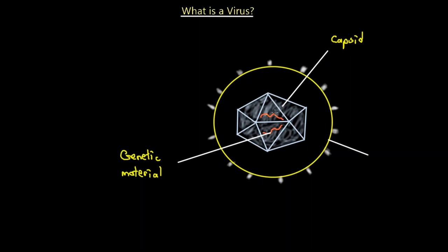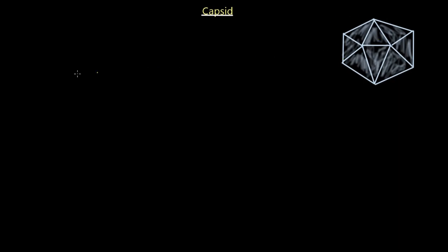The yellow circle drawn around the capsid and genetic material, with little projections, is called an envelope. Not all viruses have an envelope, and we'll talk specifically about which ones do. But it is a common feature of viruses, so let's look at each of these structures individually.